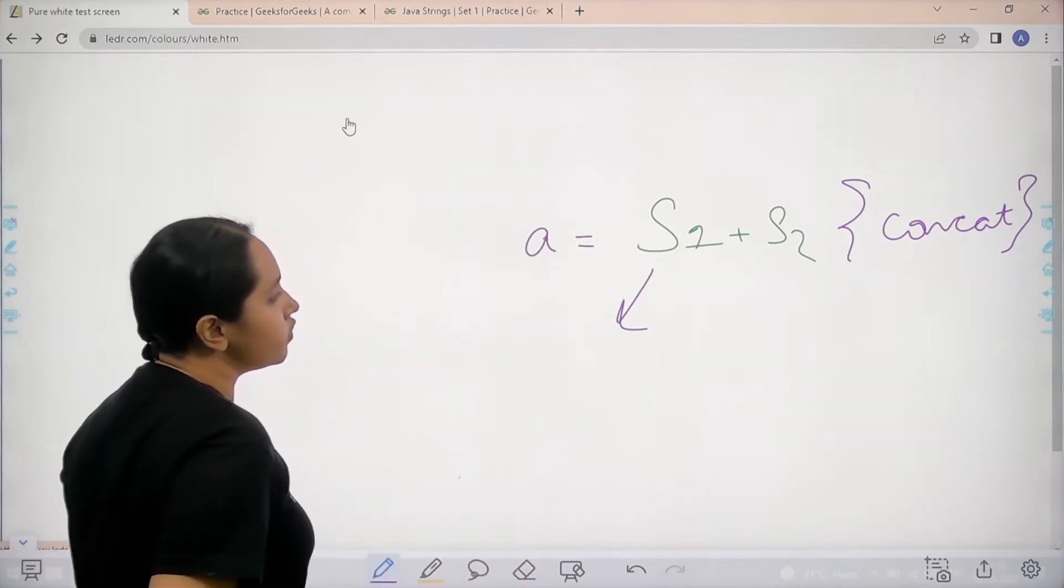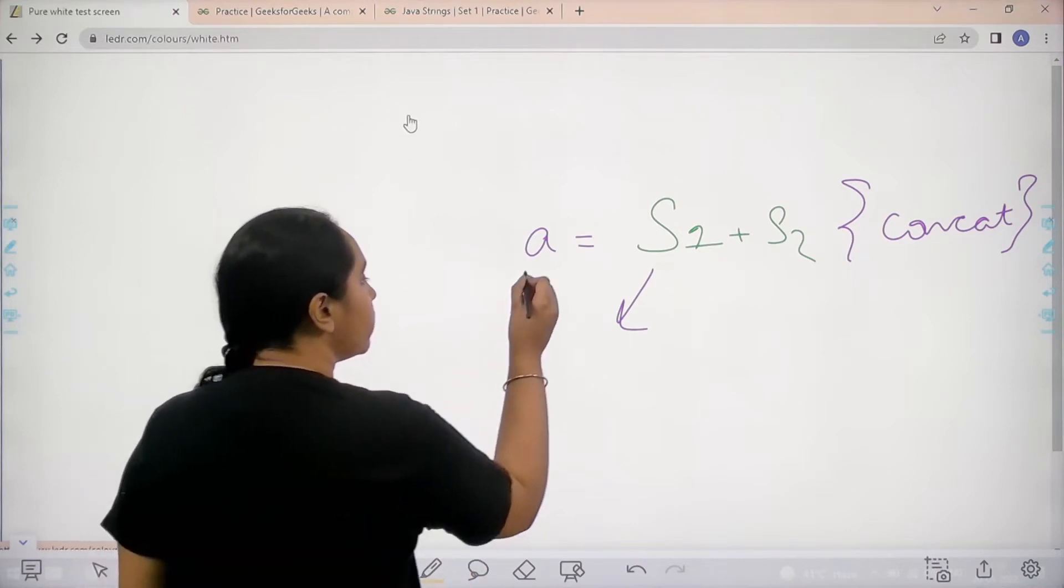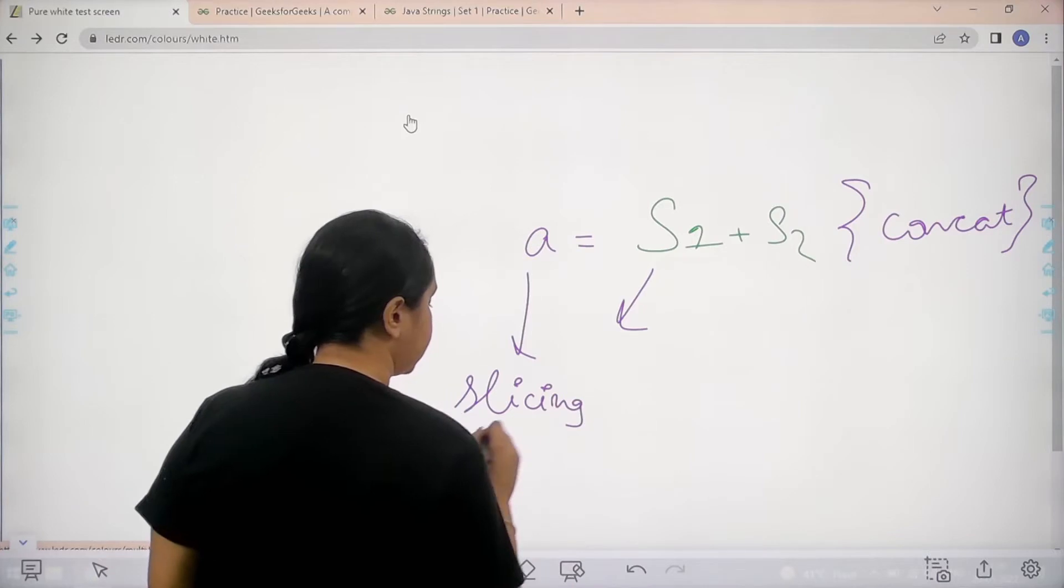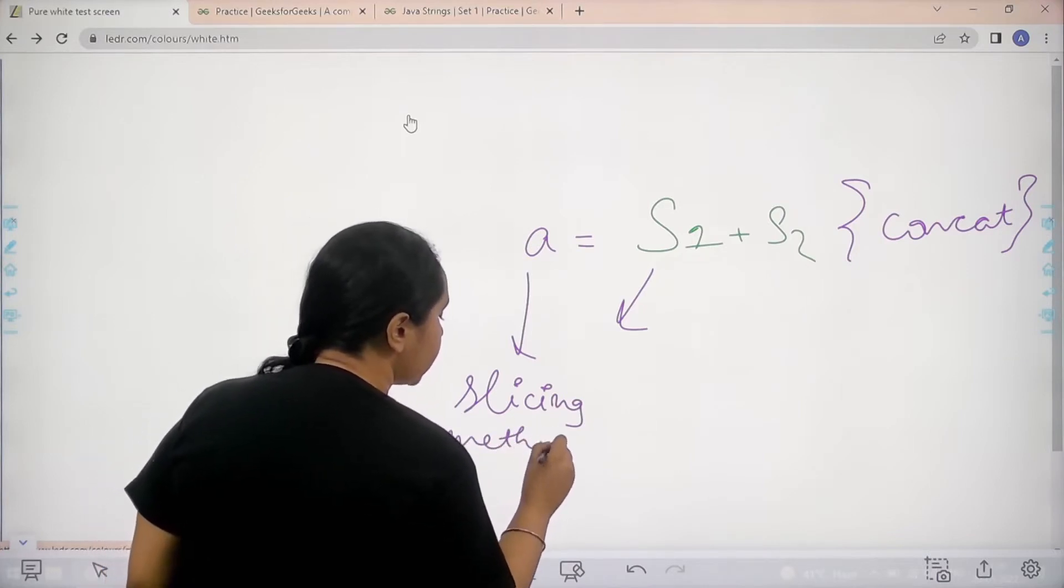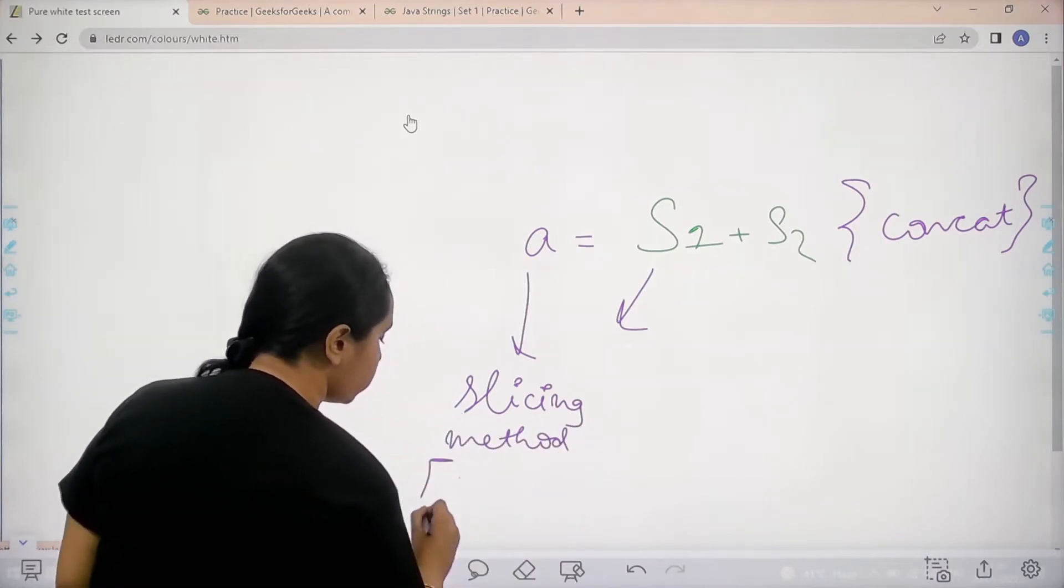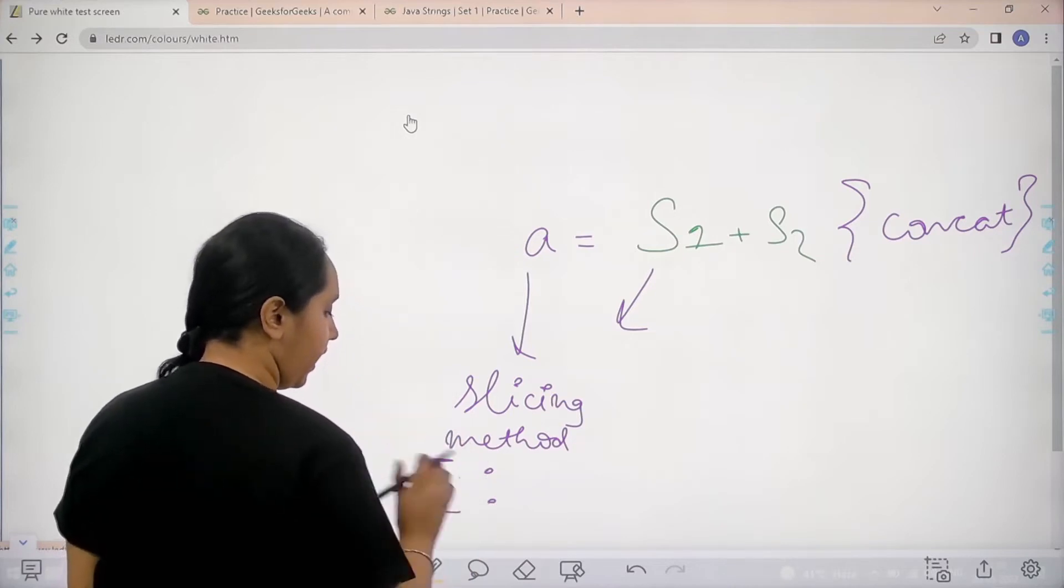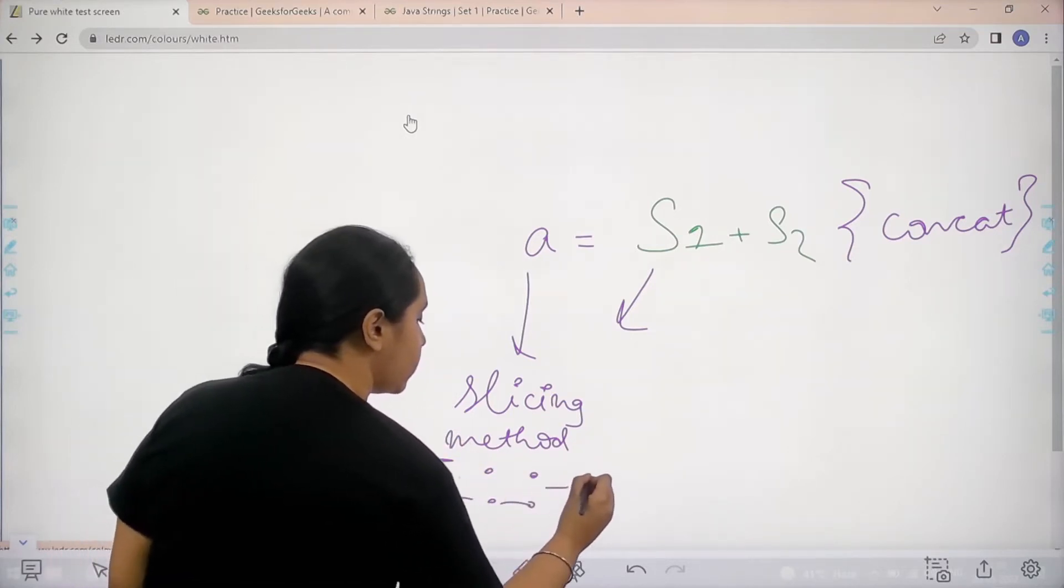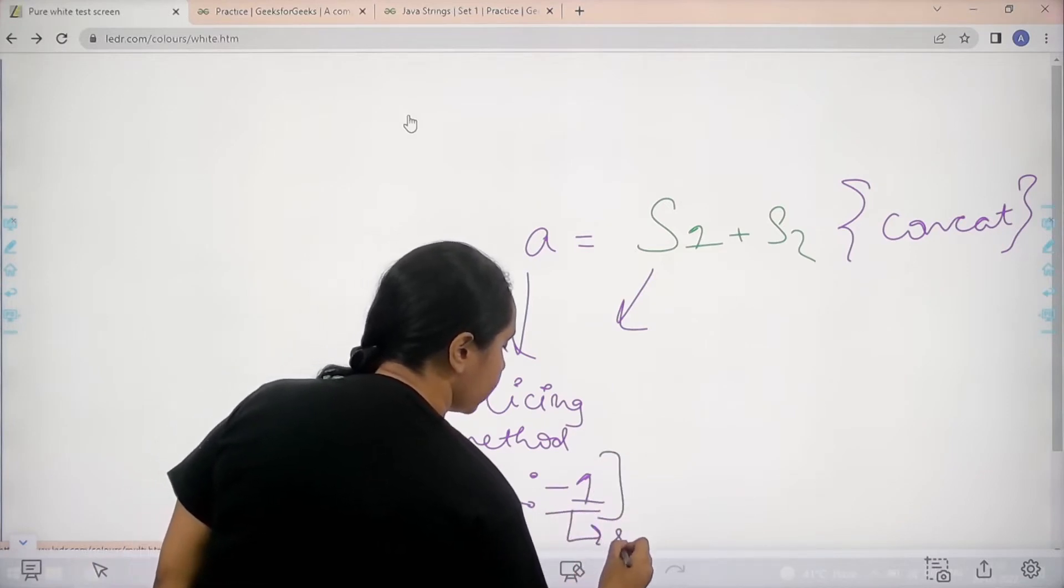Now I need to reverse string a. Now we would use slicing method for it. So basically in slicing method, we would just write blank, blank, start is blank, end is blank and then over here minus 1. This is the step size.